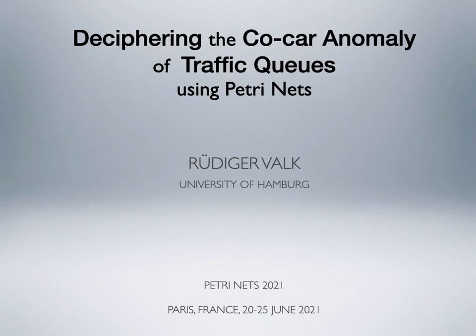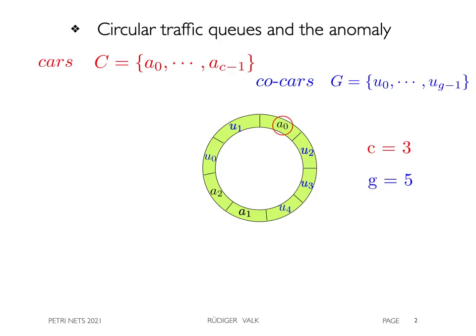Hello, my talk is on explaining the so-called co-car anomaly of traffic queues, which are defined by a number of traffic items called cars and a number of co-traffic items called co-cars.